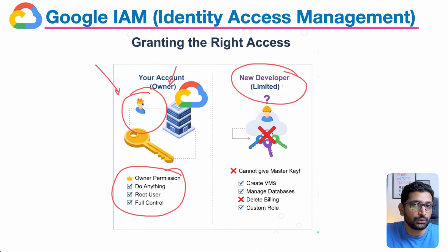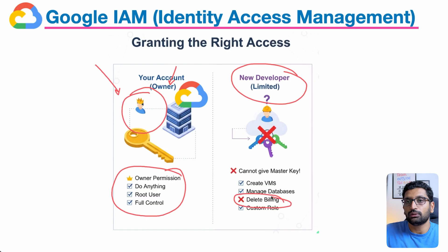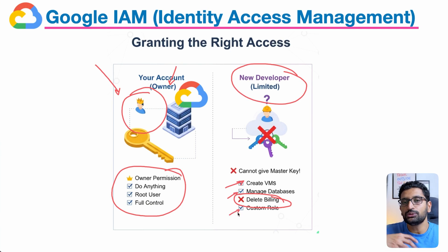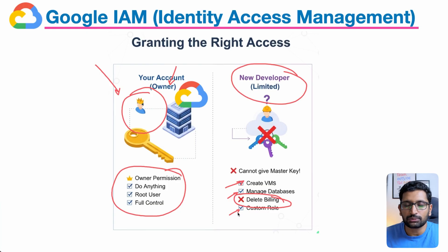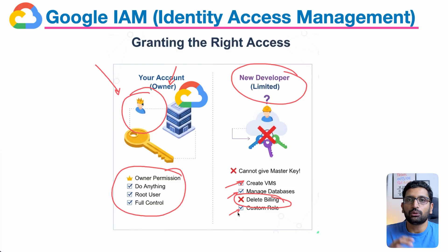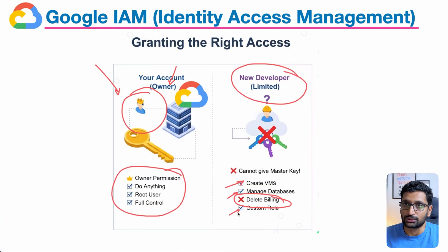What kind of restrictions can we impose for that particular developer? The first restriction is delete billing — we don't want that developer to delete or modify billing. We only want that developer to create a virtual machine, manage databases, or create custom roles. These are just a few permissions assigned to that developer — this is a random example. But the customization you can do with roles and permissions is endless. You can even assign only read-only permission, so the user can only view the console but cannot create or modify any existing resource.